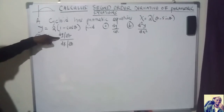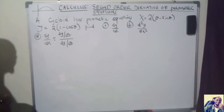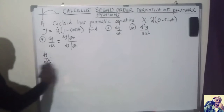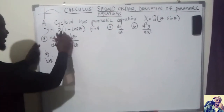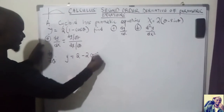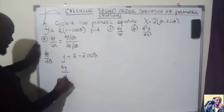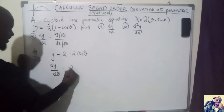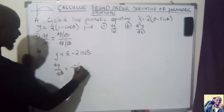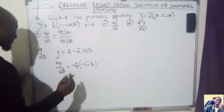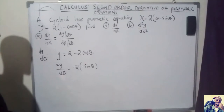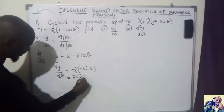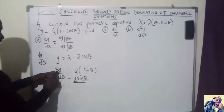What we need to do is find dy over dθ and dx over dθ, then divide them. Starting with dy over dθ: y can be expanded by opening the brackets for easy calculation. When we differentiate, the constant term stays, and differentiating the cosine term gives minus sine theta, so we get 2 sine theta. So dy over dθ equals 2 sine theta.